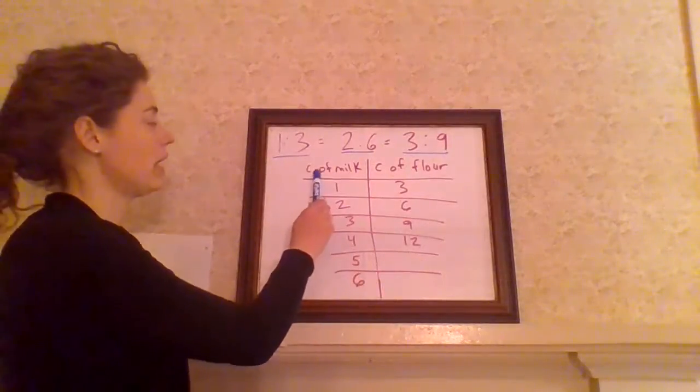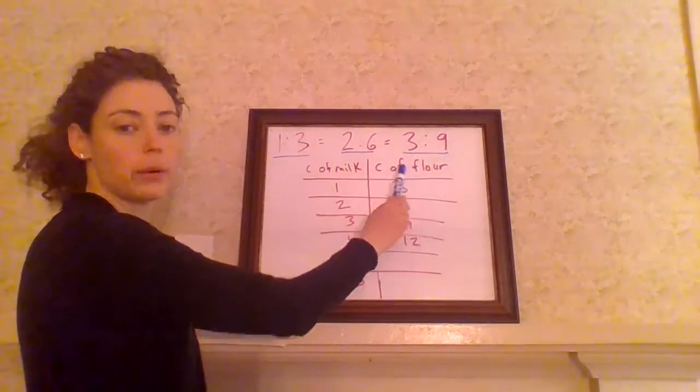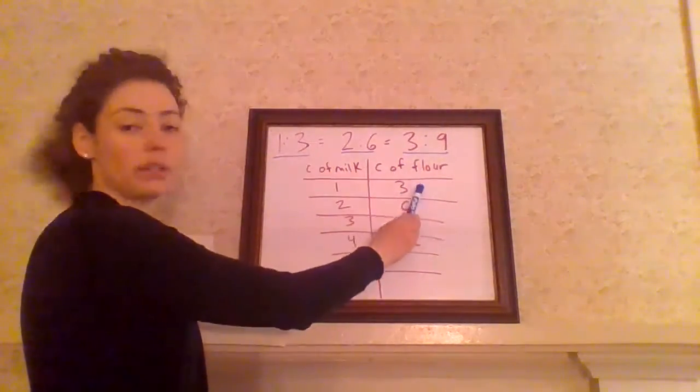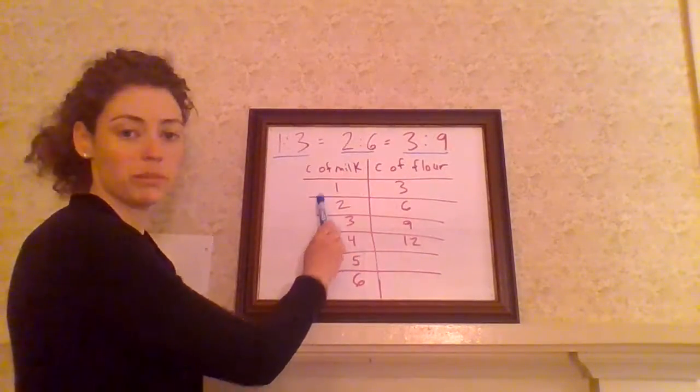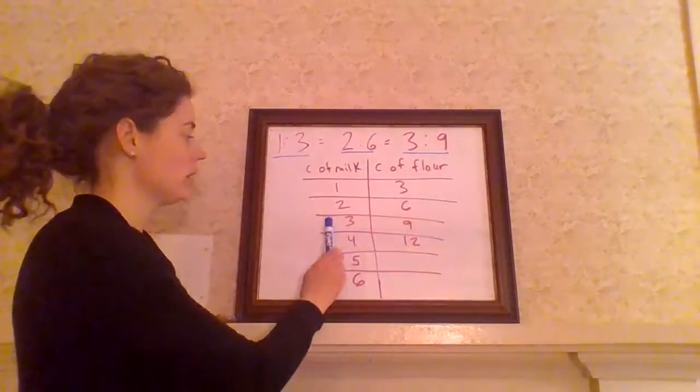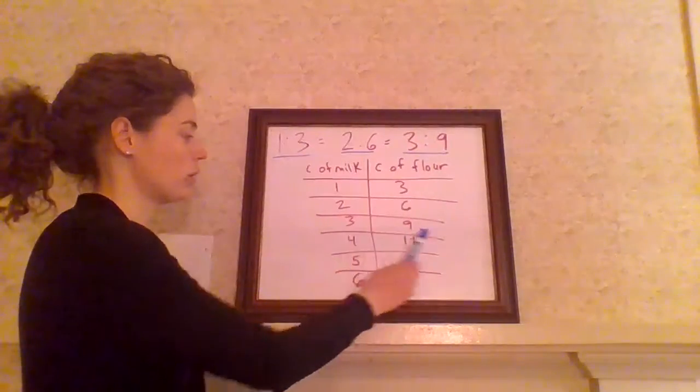So if we have cups of milk and cups of flour, and we have one cup of milk for every three cups of flour, that means if we have two cups of milk, we have six cups of flour, three to nine, four to twelve.